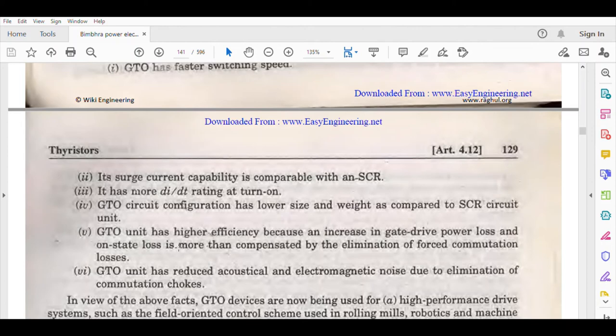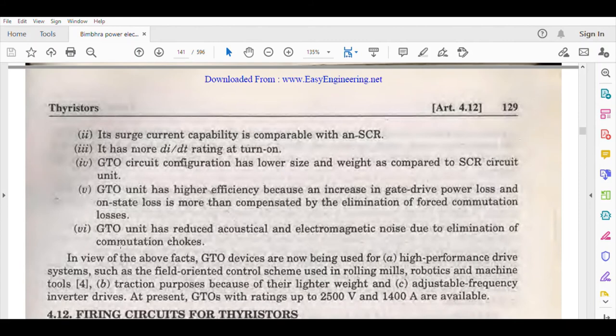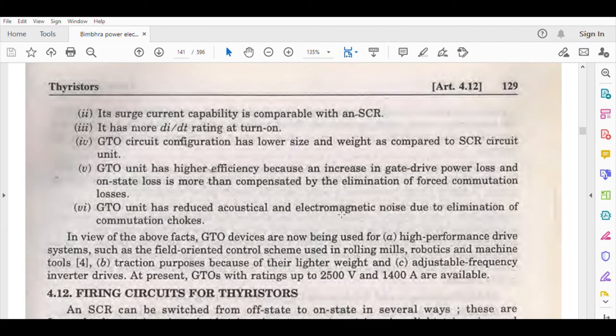GTO unit has higher efficiency because an increase in gate drive power loss and on-state loss is more than compensated by elimination of forced commutation losses. Because forced commutation is not necessary, the losses will be reduced. GTO unit has reduced acoustical and electromagnetic noise due to elimination of commutation chokes.